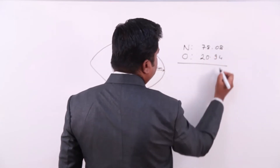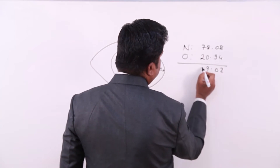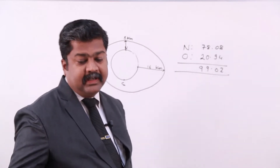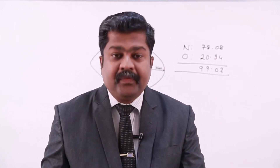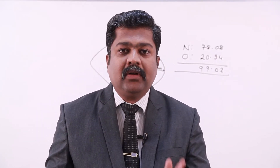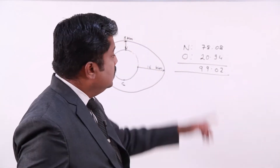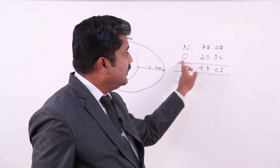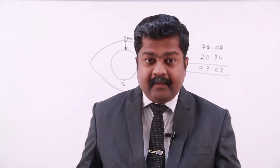Adding these together gives approximately 99.02% by volume. Just two gases — nitrogen and oxygen — make up that amount, and that is why they are called the permanent components of the atmosphere. Nitrogen is 78.08% and oxygen is 20.94%.